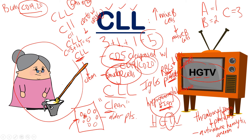Full mnemonic recap: elderly people enjoy cleaning and watching TV channels like HGTV. HG stands for hypogammaglobulinemia — decreased immunoglobulins or decreased antibodies. T is for thrombocytopenia: the few naive B cells that do make immunoglobulins produce abnormal ones, leading to an autoimmune situation where they attack blood cells and platelets, causing decreased RBCs and decreased platelets. That's the HGTV mnemonic covering the key features of CLL.